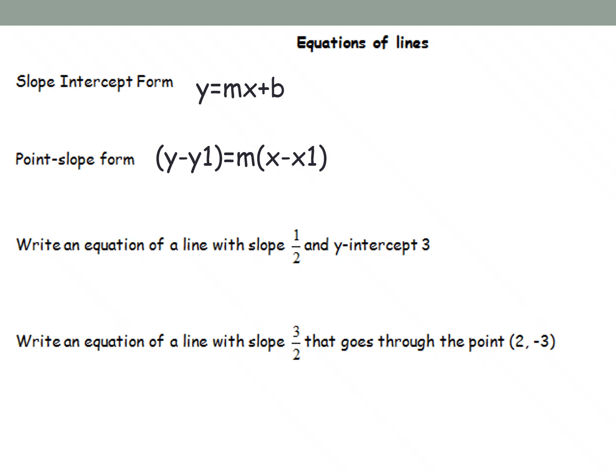So if we were to find this first piece of information, write an equation of a line with slope 1 half and y intercept 3. Because it's giving me a slope and an intercept, I would go with y equals mx plus b form. So I would substitute those values in. So 1 half goes in for m, and then 3 goes in for b. You wouldn't need to show all those steps. So the y intercept is 3, so it's a plus 3.